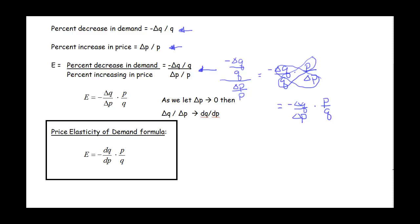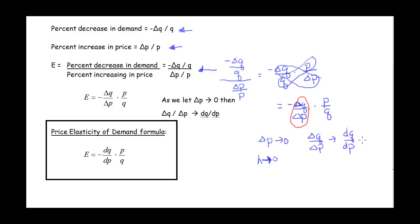Hopefully this quantity — delta Q over delta P — reminds you of the slope formula. Remember delta Y over delta X is the same idea. Since this is a slope formula, maybe that's a derivative. If we let delta P go to zero, just like we let H go to zero in the original definition of the derivative, then delta Q over delta P approaches dQ/dP. So as the changes in price get really small, the slope of the secant line approaches the slope of the tangent line, which is our derivative.